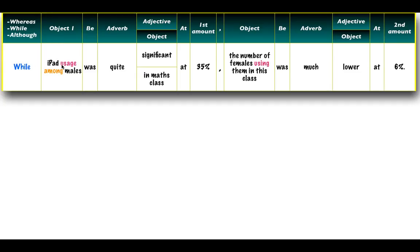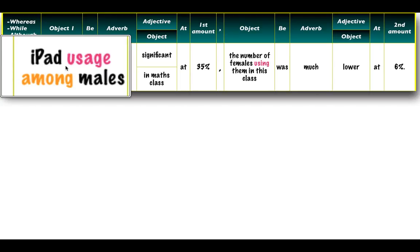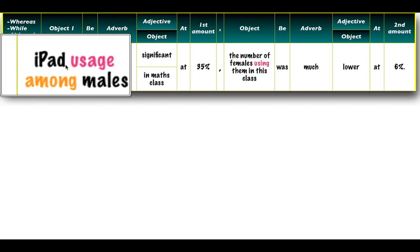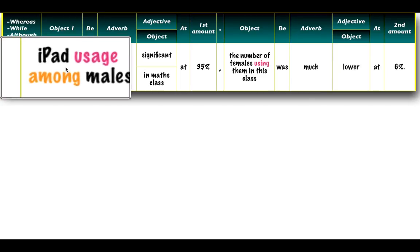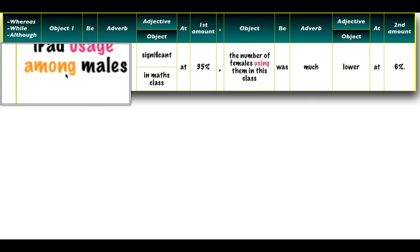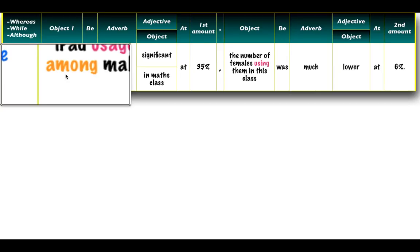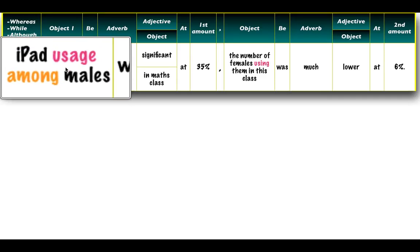Then we go on to 'iPad usage among males.' Usage is a noun form of the verb 'use,' so it's a good one to know. iPad will be used like an adjective, not like a noun. A common mistake among students is to say 'iPads usage' — that would be wrong. We also use the preposition 'among' when describing things in groups of people, so here we say 'among males.'